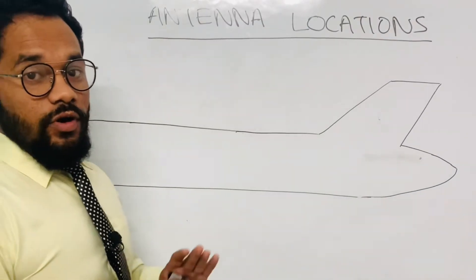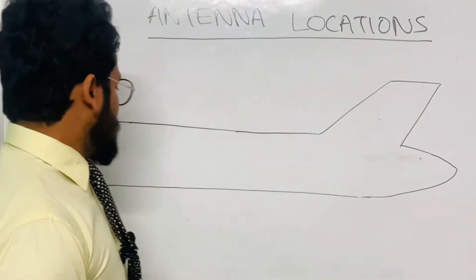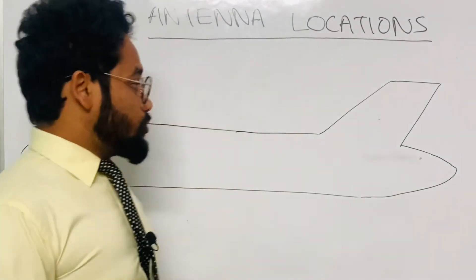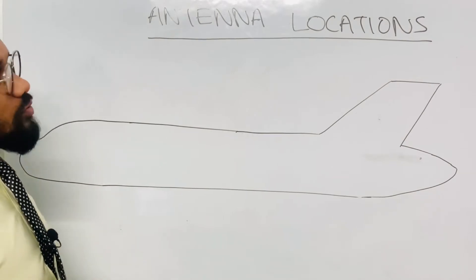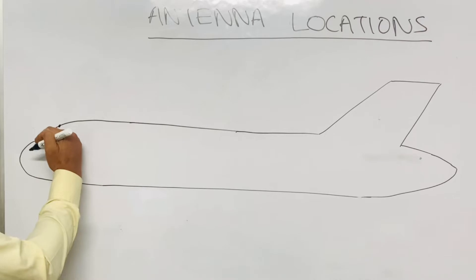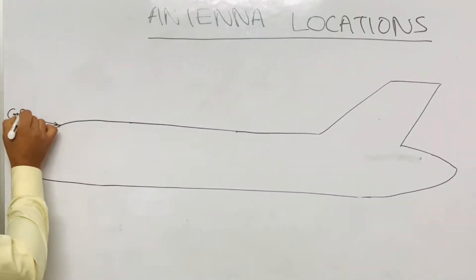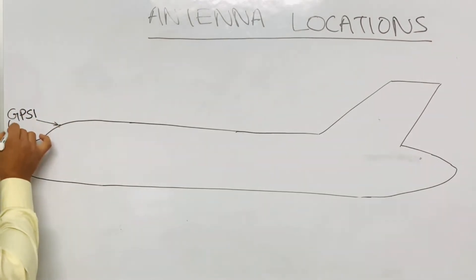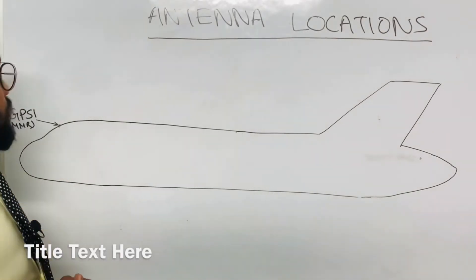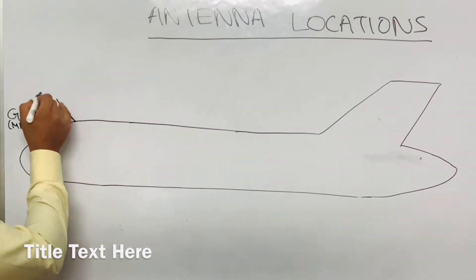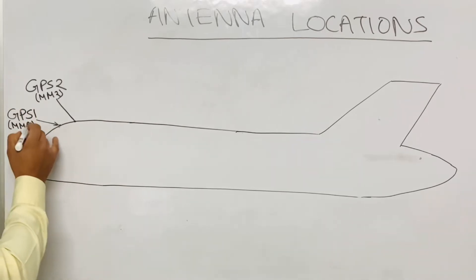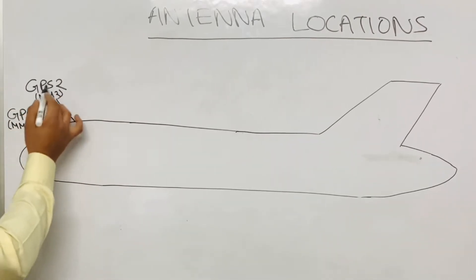Let's start with the navigation antenna — the GPS antenna. GPS is one of the most important systems in the aircraft; it provides the position of the aircraft. The GPS 1 antenna is located in the top nose section. This applies for aircraft having MMR — Multi-Mode Receiver. The GPS 2 antenna is at a nearby location, applicable when Multi-Mode Receiver 2 is also present.